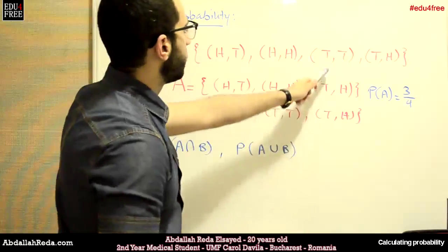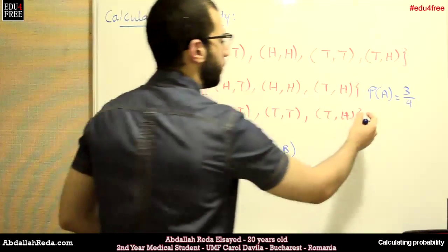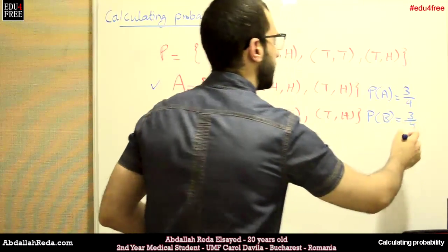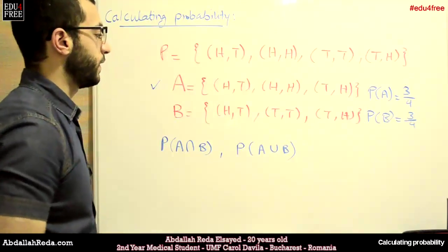For B, again, 3 divided by 4. So P equals 3 divided by 4. Again, 75% of the time.